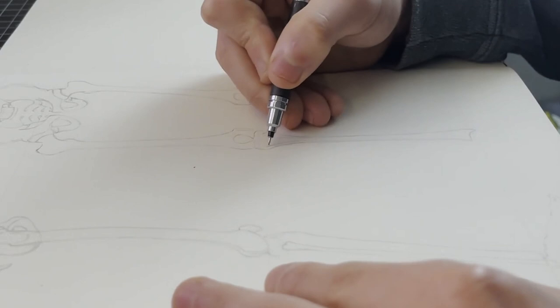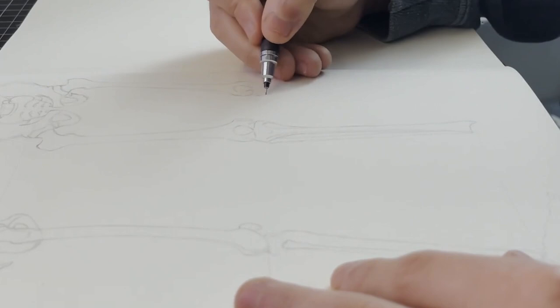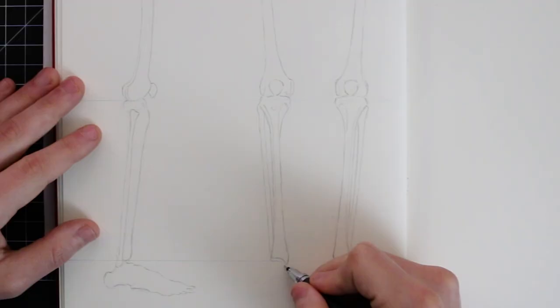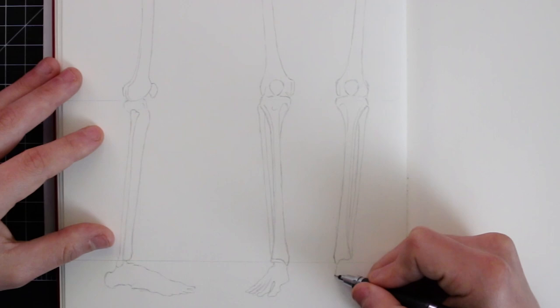Now the leg consists of three primary bones that we'll look at in detail. Firstly there's one bone in the upper leg referred to as the femur bone, and then there's two bones in the lower leg referred to as the tibia and the fibula. There's also the patella or kneecap which is located between the upper and lower leg bones.